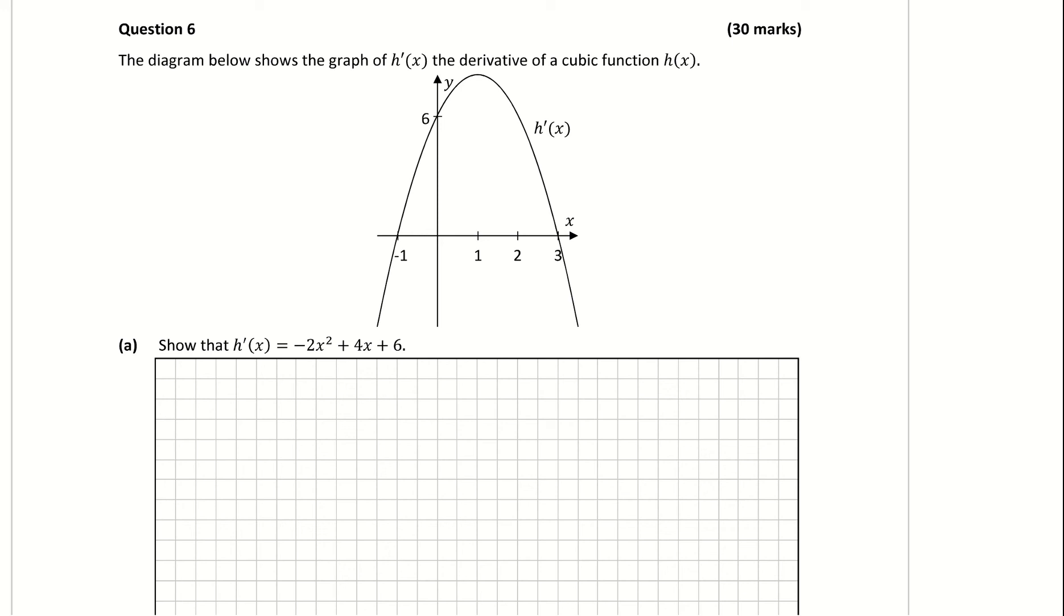Our graph here is a negative quadratic. It would originally be a cubic before it was differentiated. From our graph, we know that the roots where it crosses the x-axis are going to be x = -1 and x = 3. I'm going to turn those roots now into factors. So our factors are (x + 1) and (x - 3).